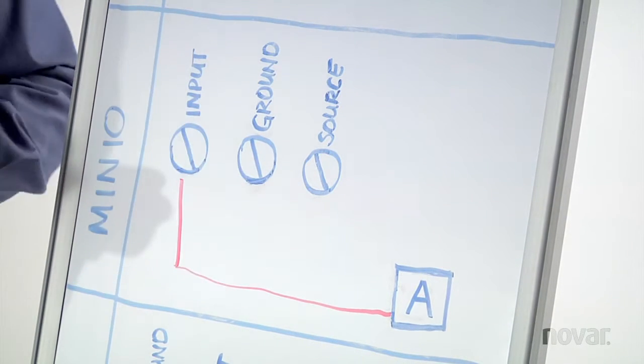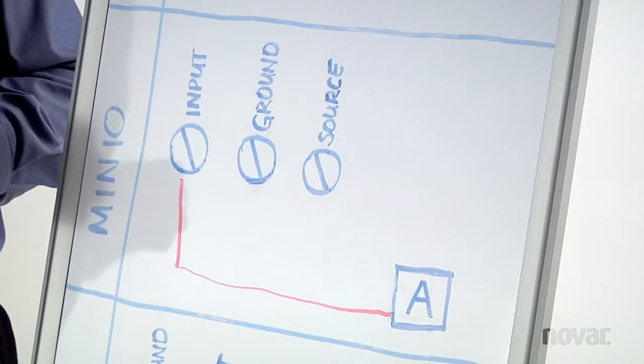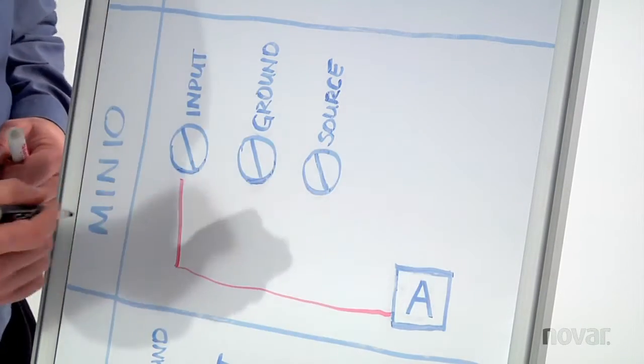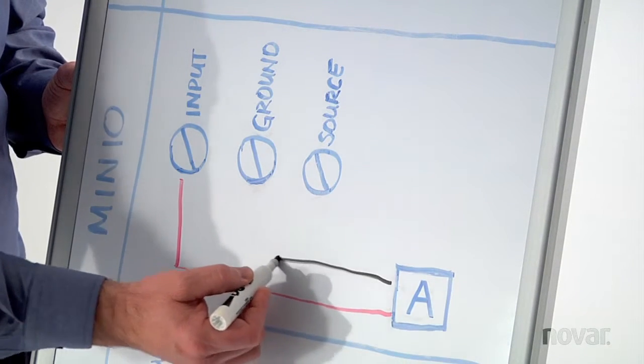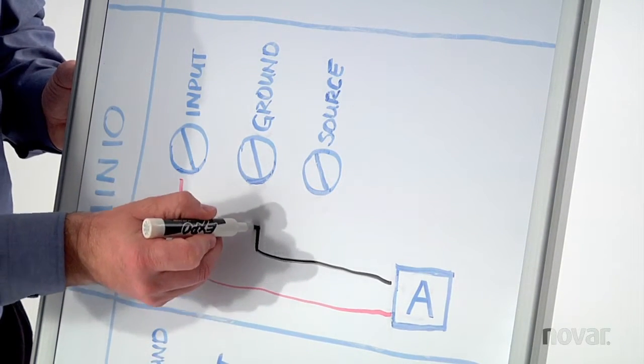Same scenario again, this is a DC signal. We need a reference on that DC signal. So we'll come from the common or ground terminal of that analog sensor, and that'll go to the ground of the MIN-IO.